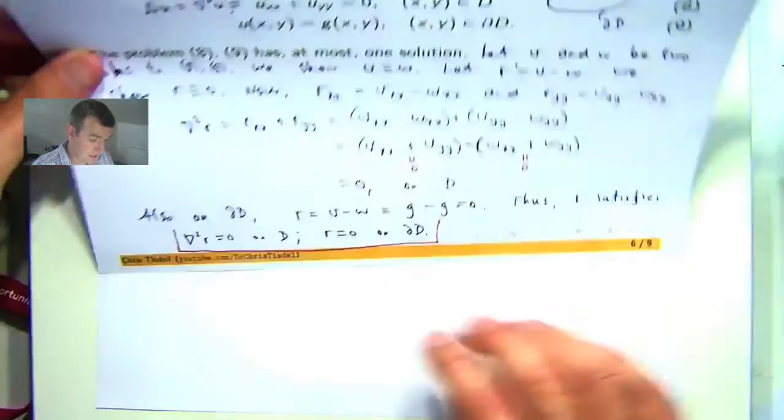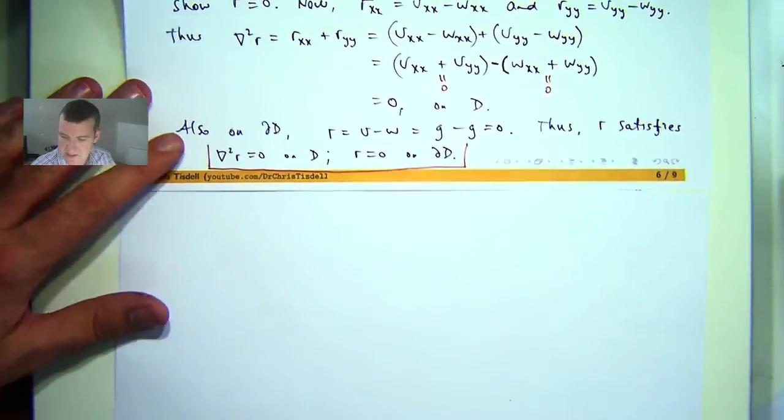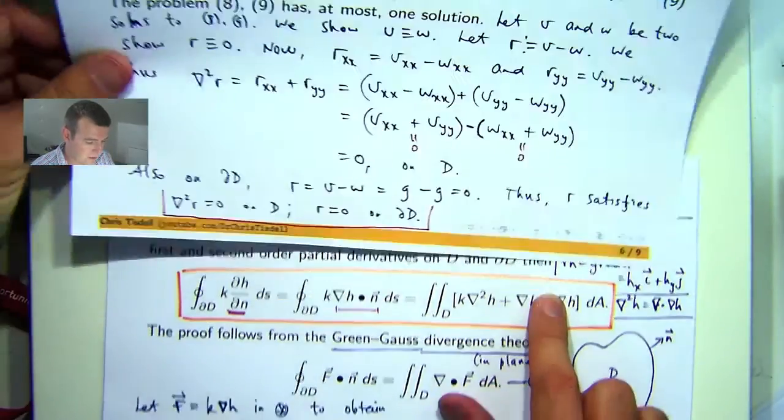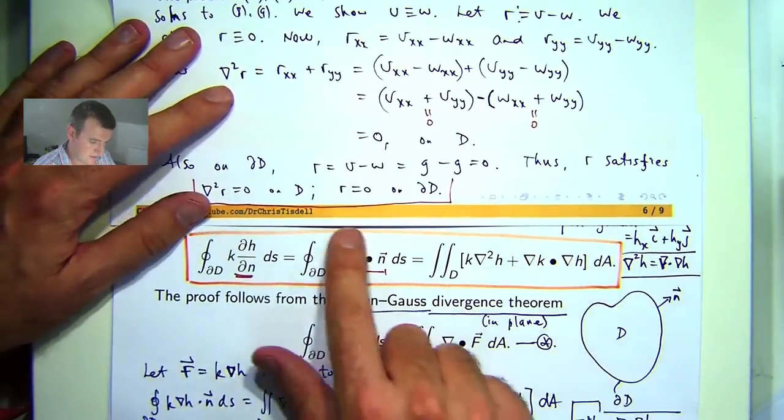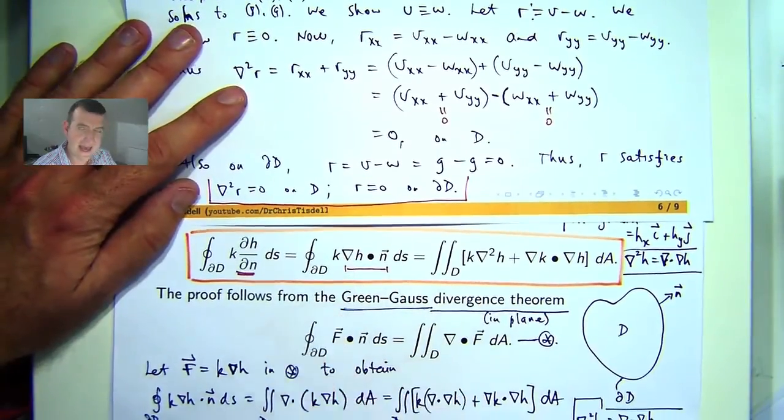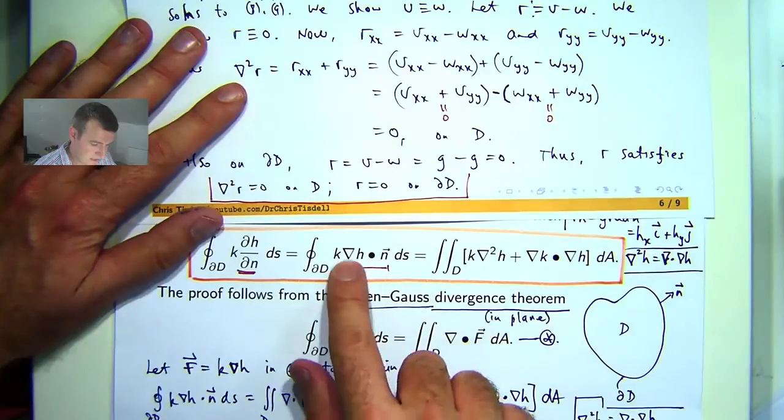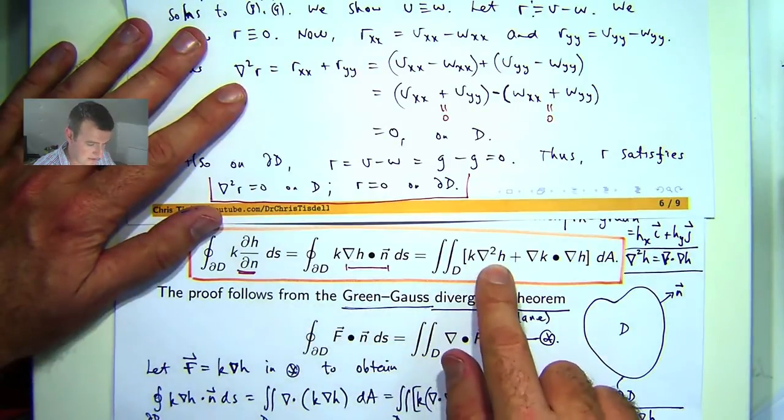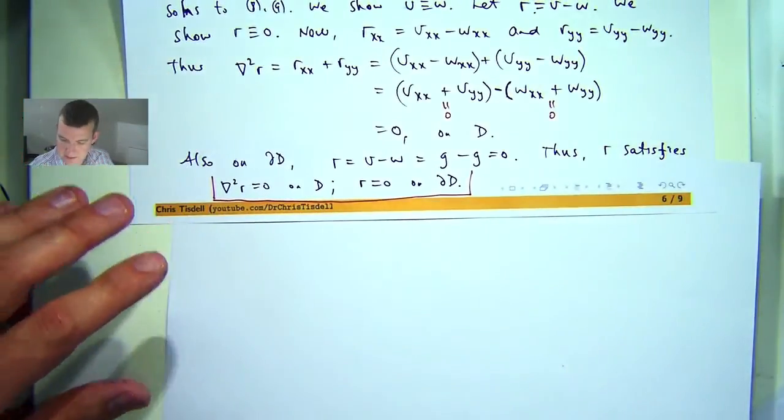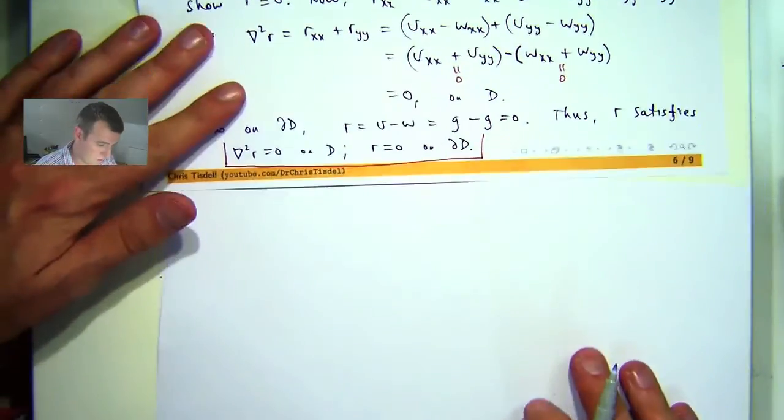So we've reached a critical point now in the proof and it's now time to get Green's identity into the mix. So this is Green's identity here. What we're going to do is write down Green's identity with K and H both replaced by R. Now here of course this is the gradient of H, this is the Laplacian of H. So let's actually write that down and we'll see that a lot of cancellation or simplification occurs.